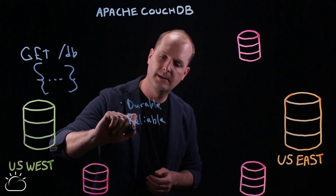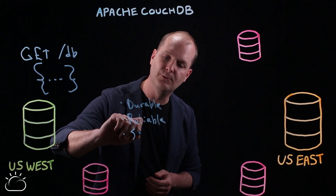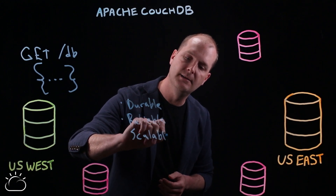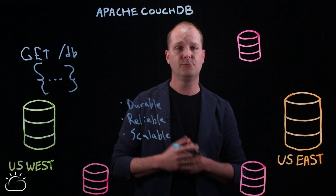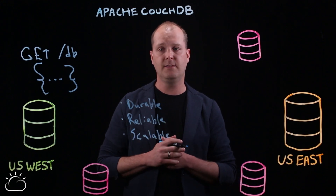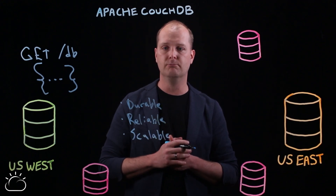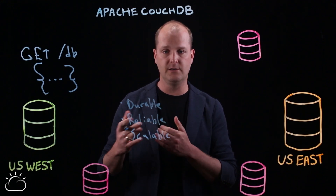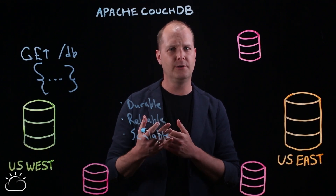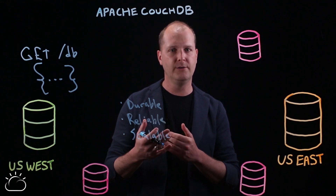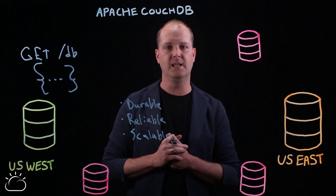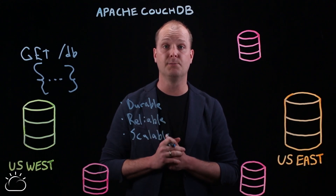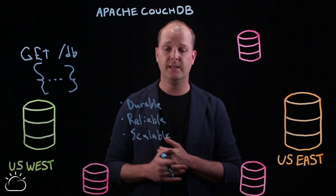Couch is a NoSQL database — a non-relational database — and that means it makes some trade-offs. You have to think about how to model your data in JSON document form, and you have to have a pretty good understanding of the kind of queries you want to make of the database so that you can design the right views and indexes to support those queries.